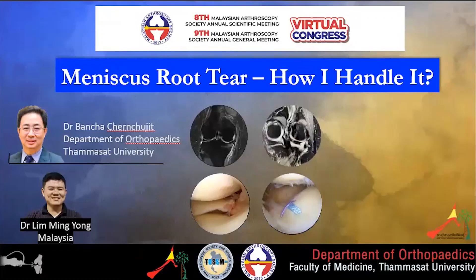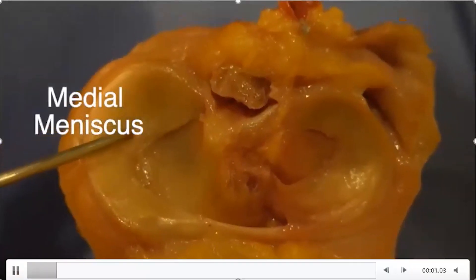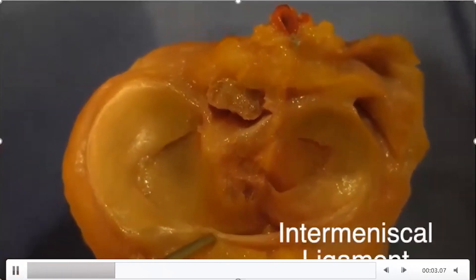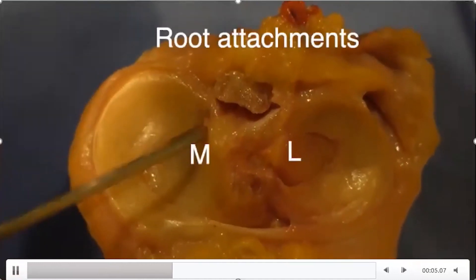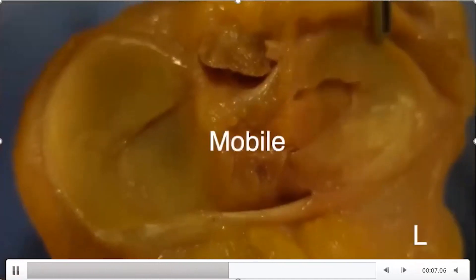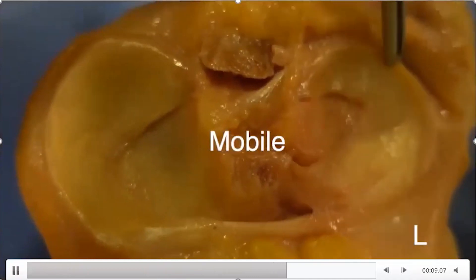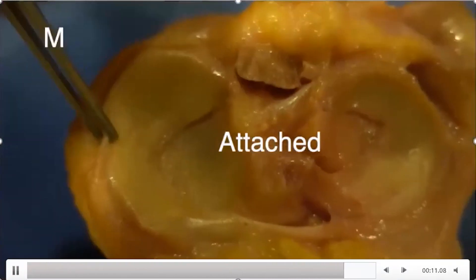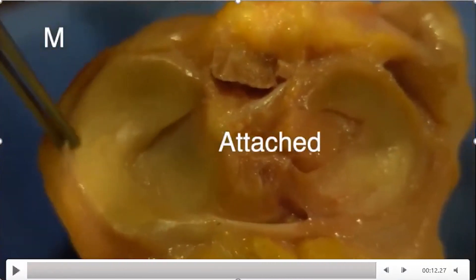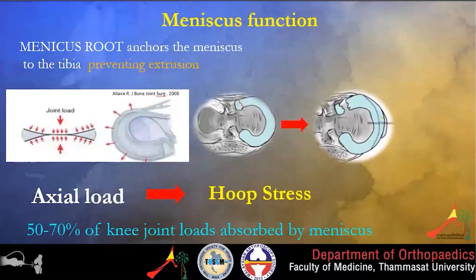Good day everyone. I'm presenting on meniscus root tear and how I handle it. This is the anatomy of the meniscus — the medial and lateral meniscus is connected by the intermeniscal ligament. This is the root attachment of the meniscus. The lateral meniscus is mobile whereas the medial is not mobile. The function of the meniscus root is to convert axial tibio-femoral loads to hoop stresses.